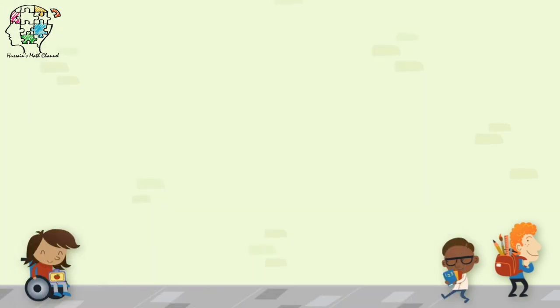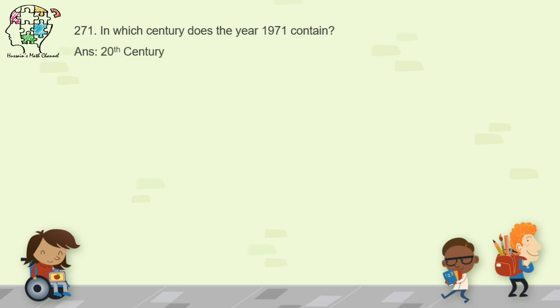Question 271: in which century does the year 1971 fall? A century is a 100-year period. From 1901 to 2000 is the 20th century. So 1971 is in the 20th century. Remember to write it in ordinal form: 20th.